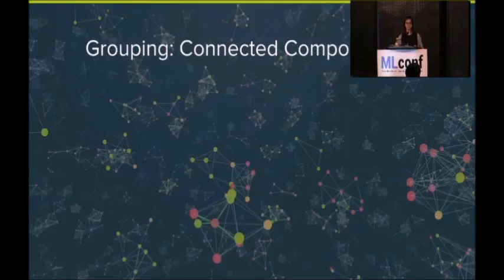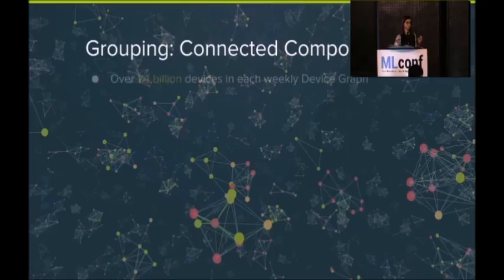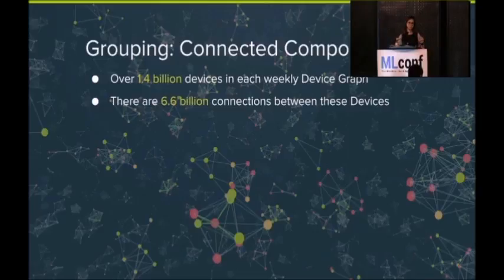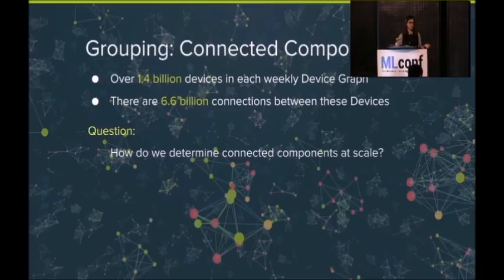So the first thing I'm talking about is connected components in a network. This is a snapshot of our device graph. This is the actual data from our graph. And you can see, to a human eye, it's very clear to pick out the subgraphs in this graph. And so each of these represents a household in our data set. And we want to be able to pick these out at scale. The problem is we have 1.4 billion devices each week in our graph build. There are 6.6 billion edges. Those are connections between pairs of devices. And the question is, how do we determine these connected components with this much data?